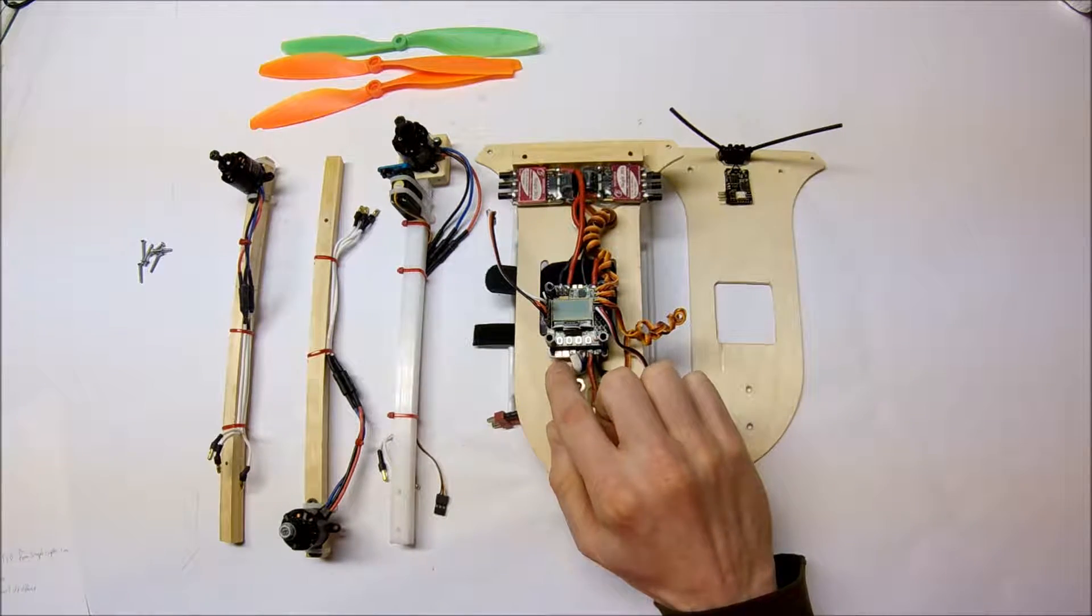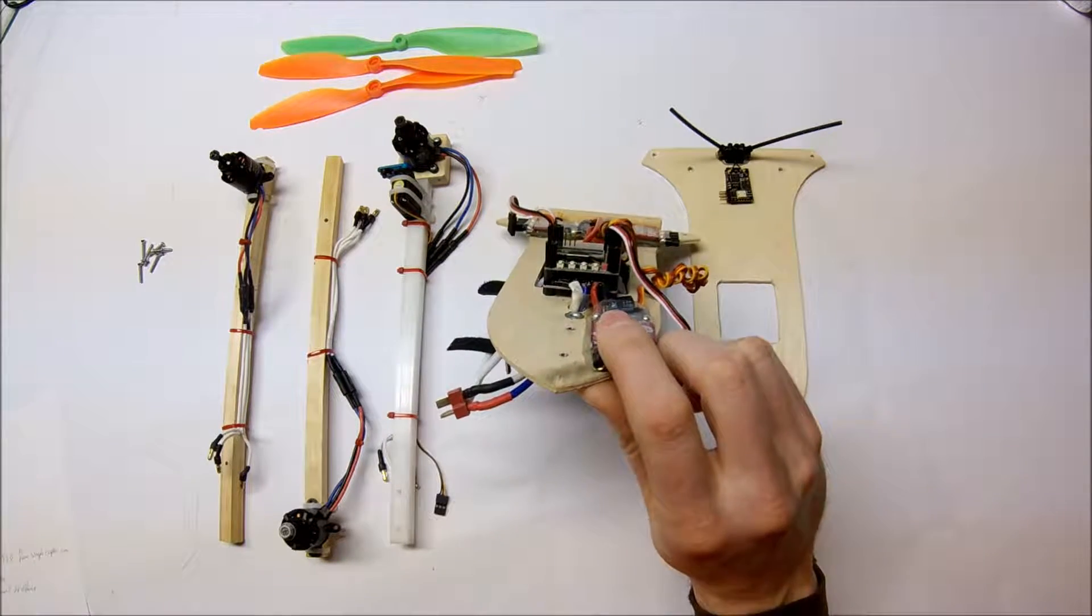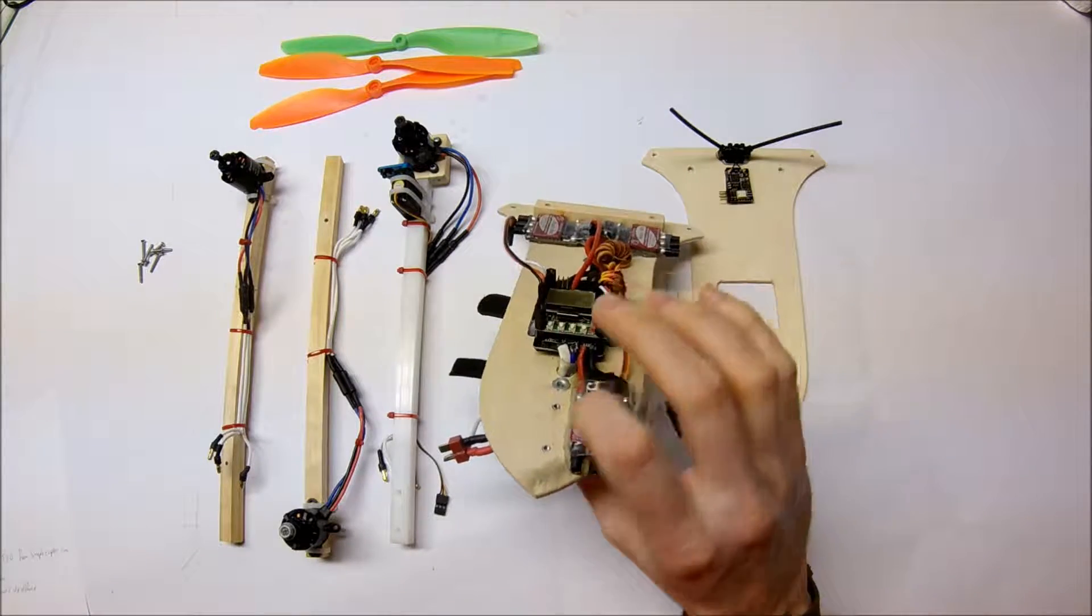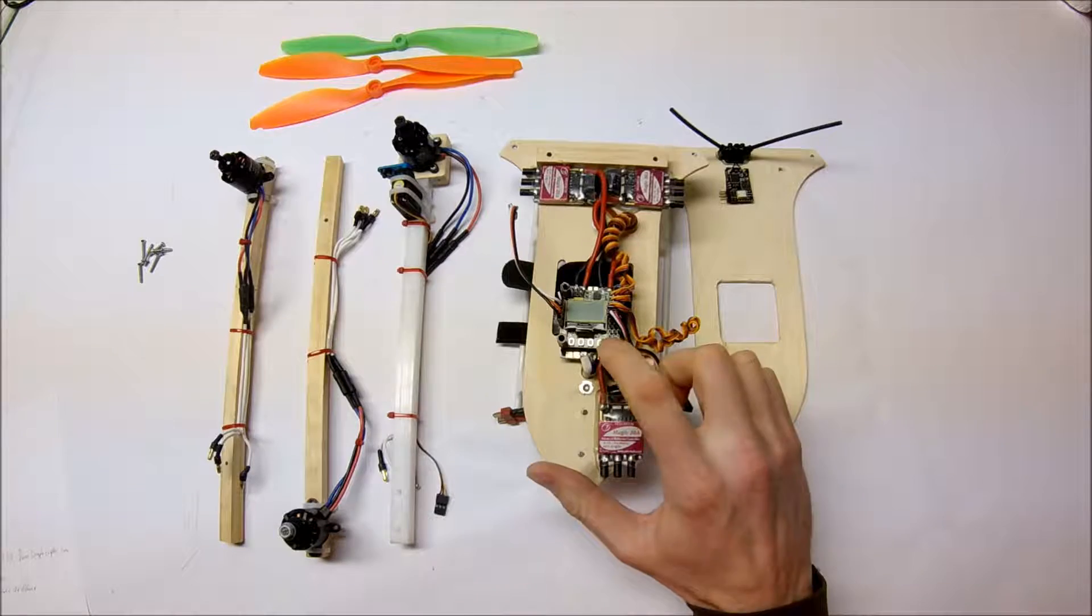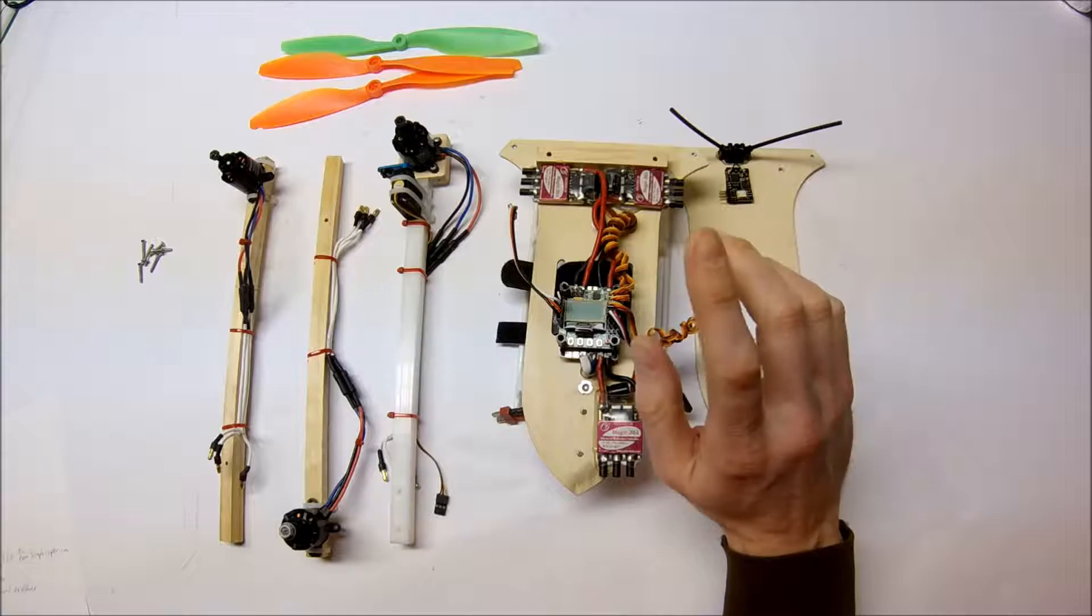So, I got a power distribution board, which is underneath the flight controller here. I don't know if you can see that. I just mounted that with some nylon standoff posts, and then I just soldered the battery leads and the ESC leads right to it, and it's nice and clean. That's the first thing I did different.